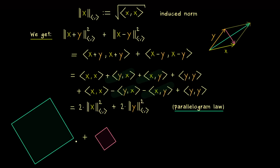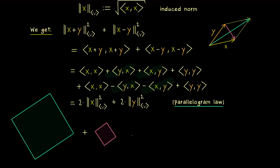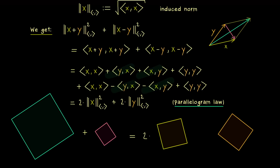If you want to visualize it even more, we take the area of the big square here and add it to the area of the small square there. On the other hand, we can also calculate the areas given by the squares from the vectors x and y. We have to multiply these areas by two and add them up to get the same result as the left-hand side. So this is an equation that talks about all sides in a given parallelogram — more precisely, it tells us something about the squares of these sides.